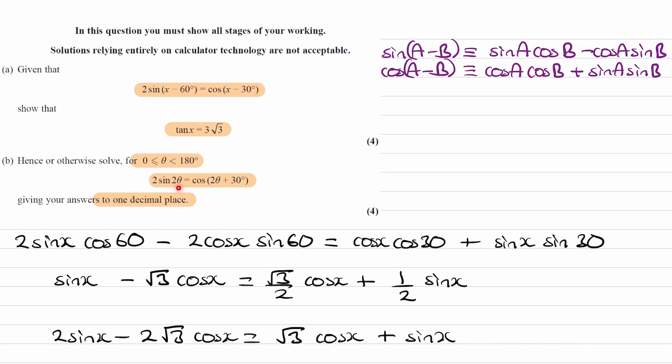We have x - 60°, 2θ, x - 30°, 2θ + 30°. It says hence in our question. So that suggests we're going to be using the previous part of the question. Or at least we can use the previous part of the question. That suggests to me that some kind of substitution has been used to go from here, this equation, to that one.